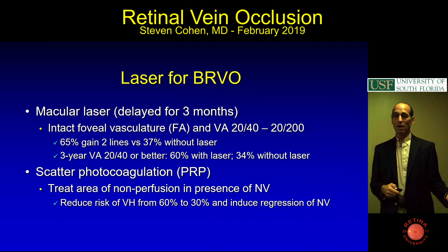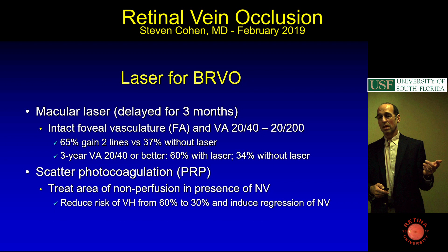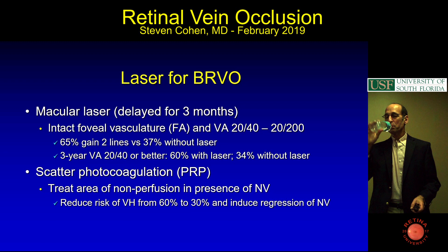Laser for BRVO we don't really do anymore—it was one of the least effective of all the lasers, but it does work. You delay for three months, and if there's an intact foveal vasculature and reasonable vision, 65% of patients gain two lines with laser versus 37% without laser. At three years, 60% are 20/40 or better when treated. This is still stuff you might get tested on.